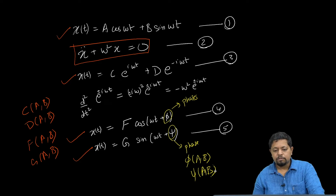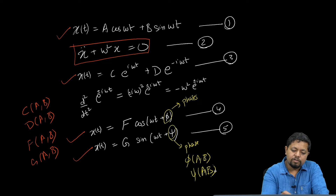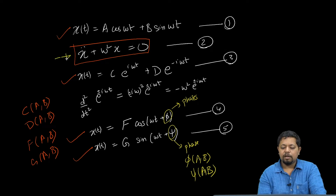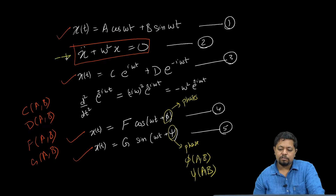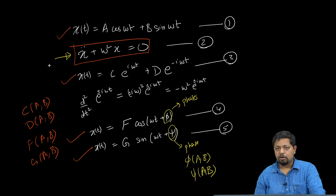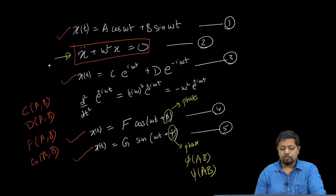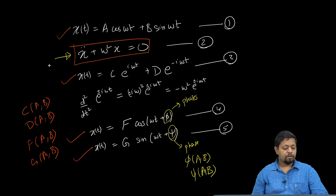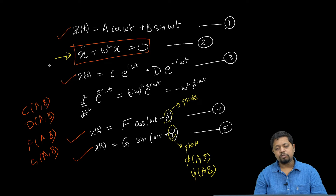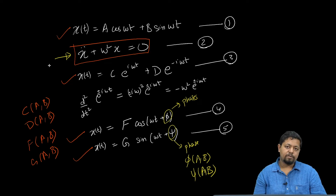We have found the solution of this differential equation as any one of these four equation forms. In order to find the constants, you need more information — you need to know the boundary conditions or the initial conditions. If you know the initial and boundary conditions, you can solve and find what these constants are. This is the most general solution; for an exact solution you must apply those conditions.